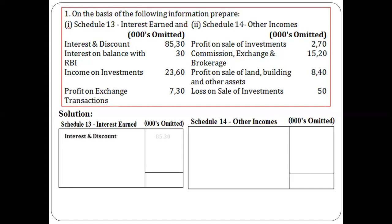Interest on balance with RBI: the bank keeps a certain amount with RBI, from which it earns interest — this is also a Schedule 13 item. Similarly, income on investments is a Schedule 13 item because investment is a core banking activity, so any income from it is classified under Schedule 13.